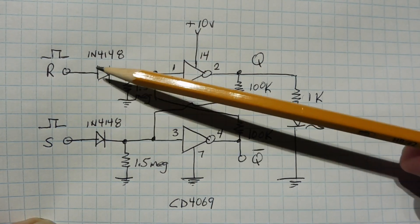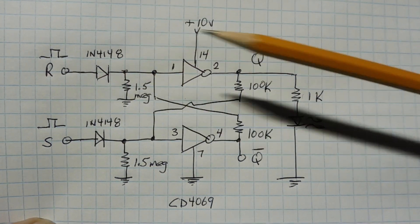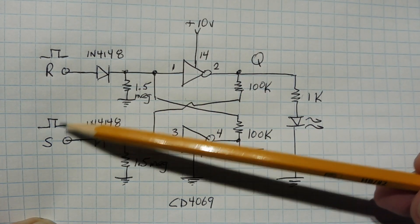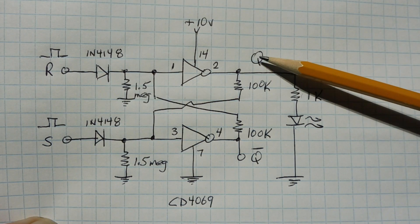Now if we pulse the reset line with a positive going pulse, Q output will go low and if we pulse the set line with a positive going pulse, Q output will go high.